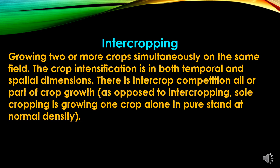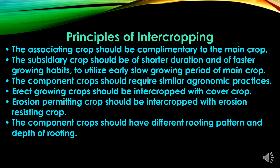Intercropping is the growing of two or more crops simultaneously on the same field. The crop intensification is in both temporal and spatial dimensions. There is intercrop competition — all or part of crop growth is overlapping. Sole cropping, by contrast, is growing one crop alone in pure stand at normal density.